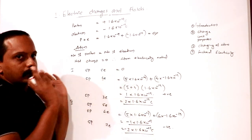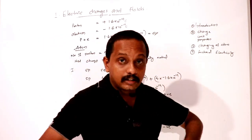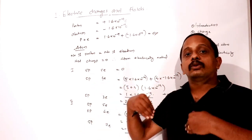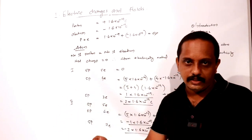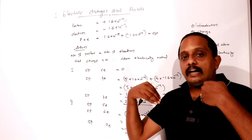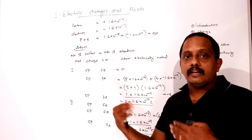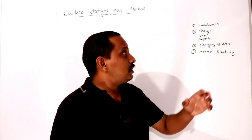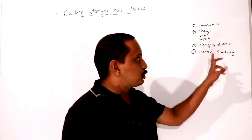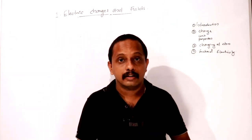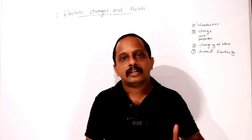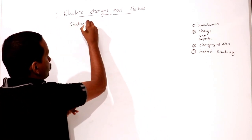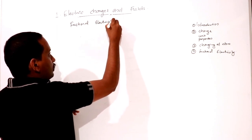An atom is normally neutral because it has equal positive and negative charges. If it loses electrons it becomes positive; if it gains electrons it becomes negative.